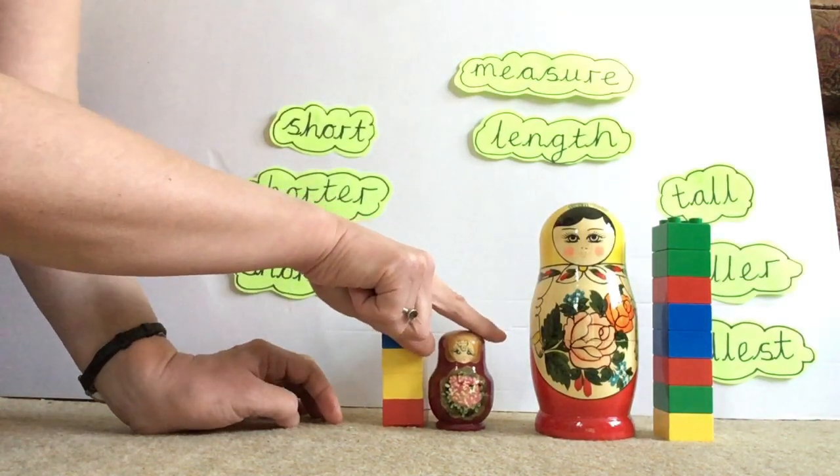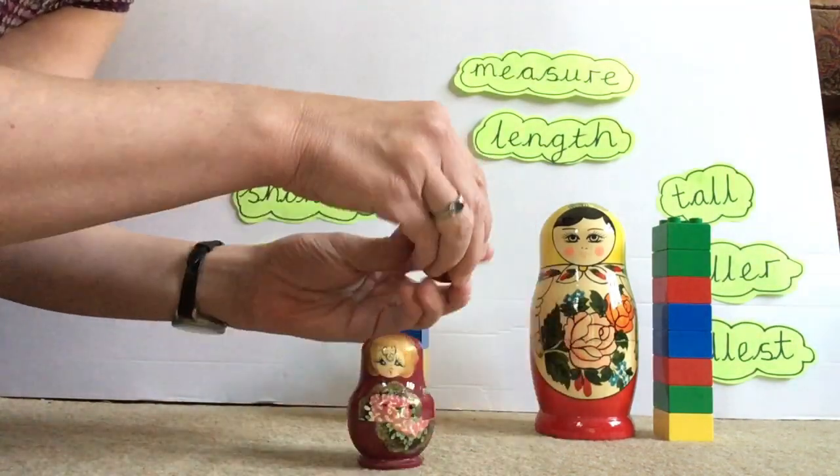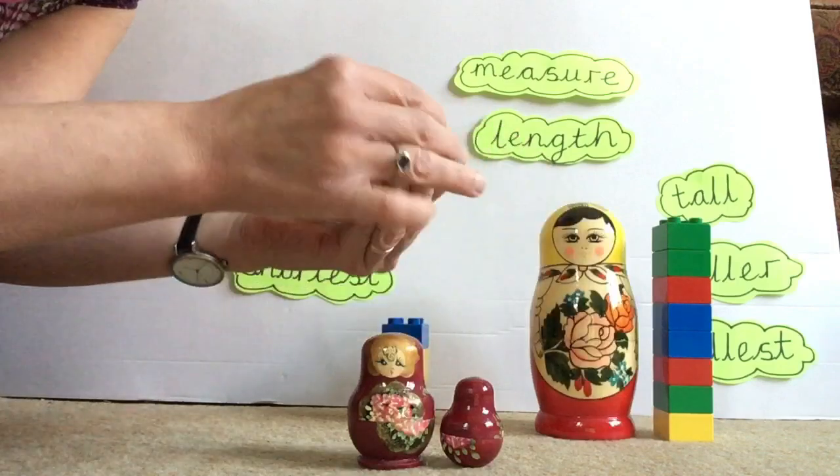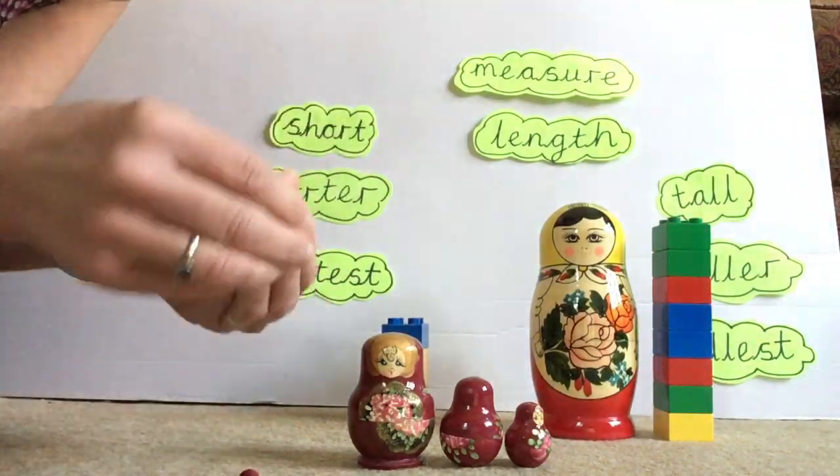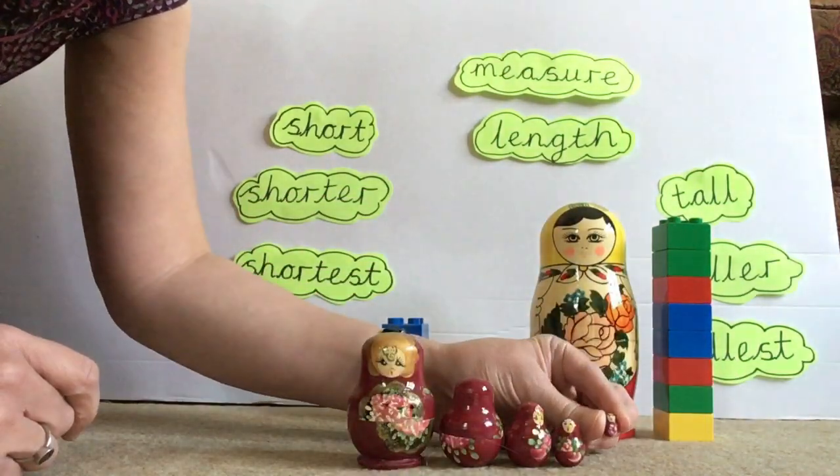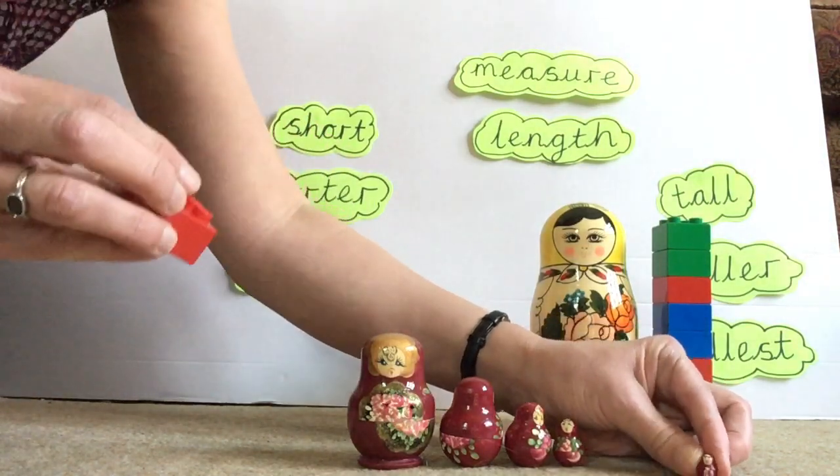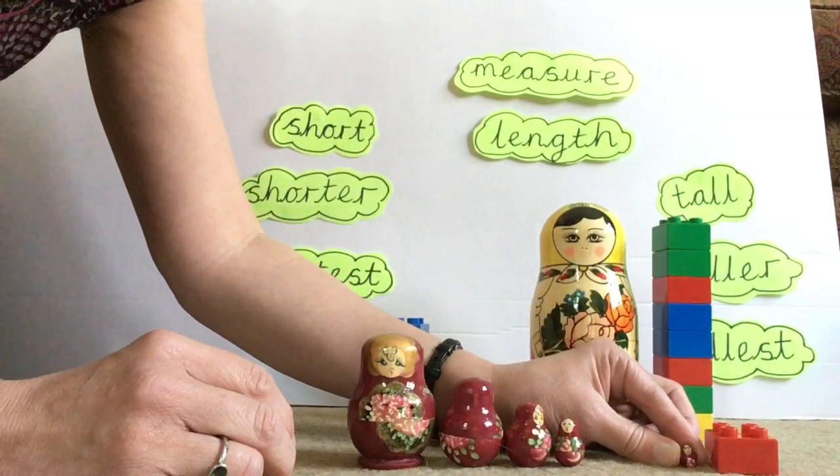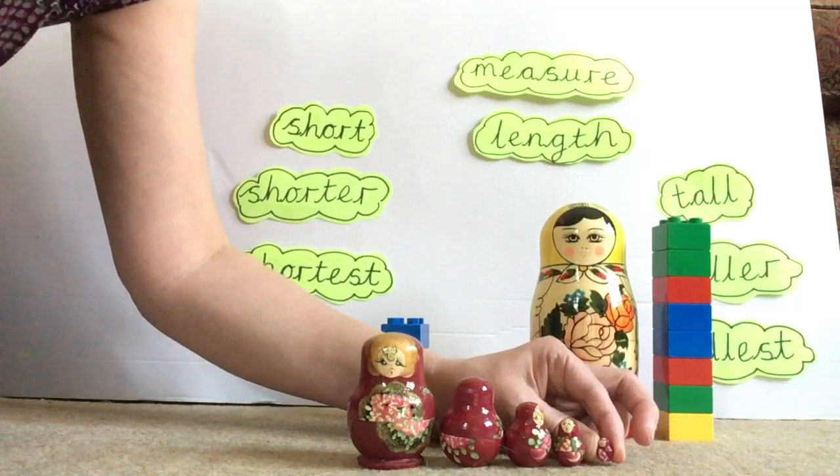If we look inside this Russian doll, see what we find. And here's the shortest Russian doll of them all. Can you see that one? It's tiny. Should I try and measure that one with the bricks? Here it is. I'll put it a bit further back so you can see. It's not even the same size as one brick. It's shorter than one brick. So that's the shortest Russian doll of them all.